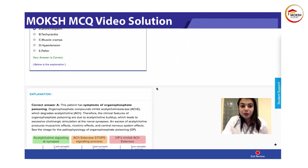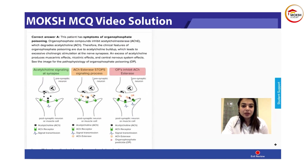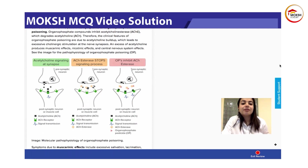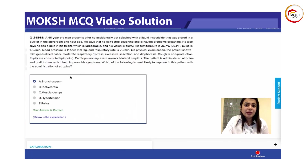Atropine works on bronchospasm. Why? Because you have different types of receptors — acetylcholine, cholinergic receptors — and what they do is cause relaxation of your bronchial muscles. So that is why you're going to give atropine.